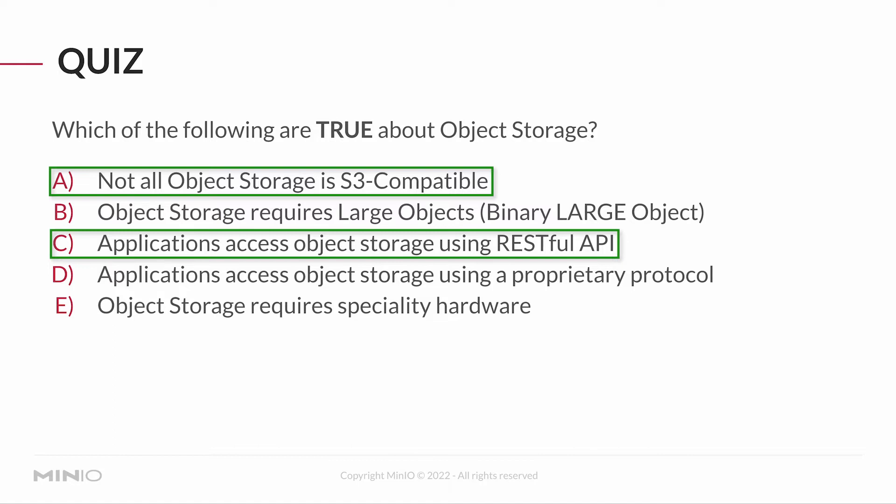And C — applications access object storage using a RESTful API — also true. Our command line client may seem like it's a proprietary protocol, but it is not. It is really just using the RESTful API underneath. The console is accessing through the RESTful API, our SDKs use the RESTful API — everything that accesses our storage is using the RESTful API.